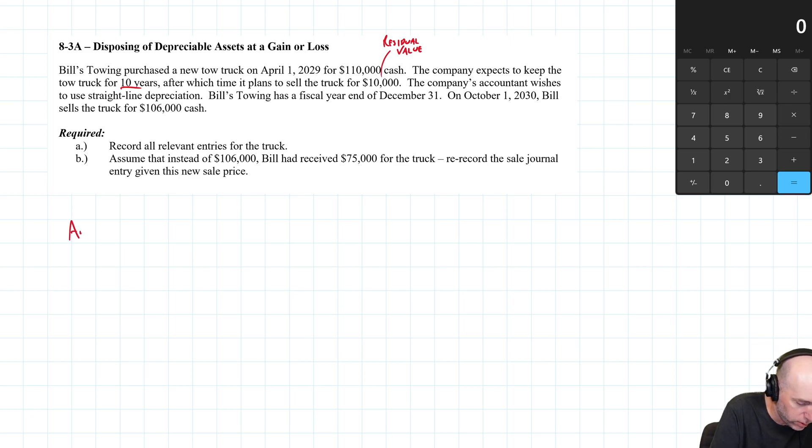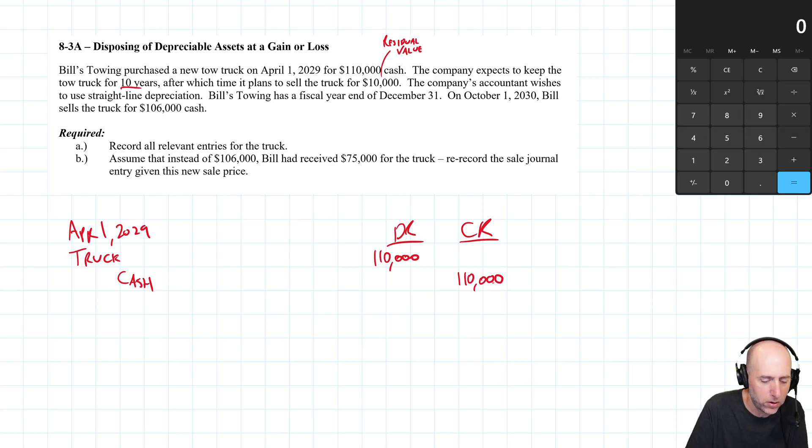Record all journal entries for the life of the truck. Let's start with buying the truck. April 1st, April Fool's Day, 2029, Bill buys a truck for cash. We're going to debit Truck, you could debit Equipment or Vehicle here, I'm going to call a truck a truck, $110,000, and we credit Cash for $110,000.